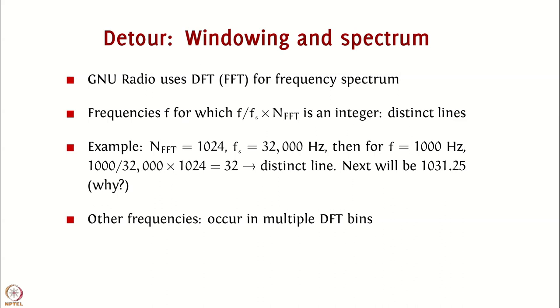To understand why we observe these kinds of spectral characteristics, we must understand how GNU radio computes the spectrum that is being displayed. GNU radio uses the discrete Fourier transform evaluated using the fast Fourier transform algorithm for obtaining the frequency spectrum. You would recall from your signals and DSP course that whenever you evaluate the DFT of a sampled continuous time signal, if the continuous time signal has a frequency that satisfies F upon Fs times NFFT, where Fs is the sampling frequency, if F upon Fs times NFFT is an integer, then the DFT produces distinct lines. That is the DFT will be nonzero only at those one or two points that correspond to the frequency F and minus F respectively. For other frequencies, this will not hold.